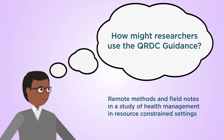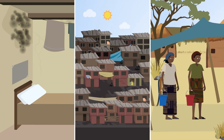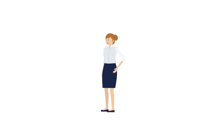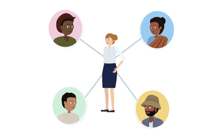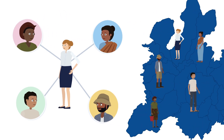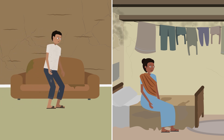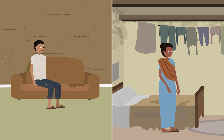Let's explore how the QRDC guidance could be used for a remote study of health management in resource-constrained settings. A researcher is planning a study with people living in resource-constrained settings about managing their health. Remote data collection will overcome barriers such as travel, but the researcher is concerned it will prevent them from taking detailed field notes about contextual information, such as descriptions of participants' homes, that can produce a richer understanding of their lives.